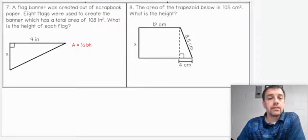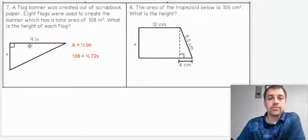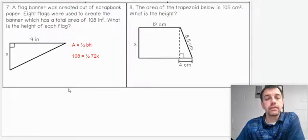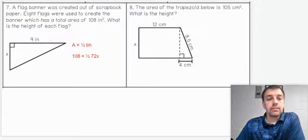So our formula is going to look a little bit different. Area equals one-half base times height. But please understand the area is 108. We're going to multiply that by one-half. And our base is not 9, but in fact it is 72. If we have 8 flags and each is 9 inches, that means in total we have 72 inches. So if you're wondering where I got the 72, it's from those two numbers combined. I know that's not obvious by looking at that, but that's how we're going to get that.